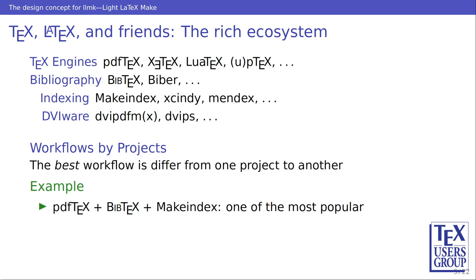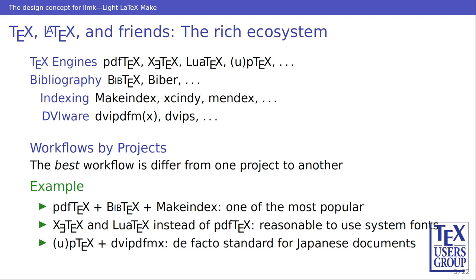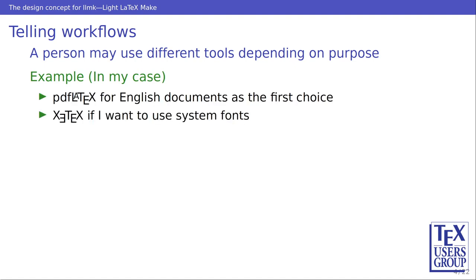Something we have to consider is that there is no ultimate best workflow which can be used for any purpose every time, but the best workflow differs from one project to another. For instance, as far as I know, using pdfTeX plus pTeX plus makeindex is one of the most popular workflows, but sometimes it is reasonable to use XeTeX and LuaTeX instead of pdfTeX, especially if you want to use system fonts. And also for Japanese documents, it is difficult to process them with pdfTeX, so pTeX plus dvipdfmx workflow is still the de facto standard. In my own case, I use pdfTeX for English documents as the first choice, and XeTeX if I want to use system fonts. And for Japanese documents, I use upTeX and dvipdfmx.